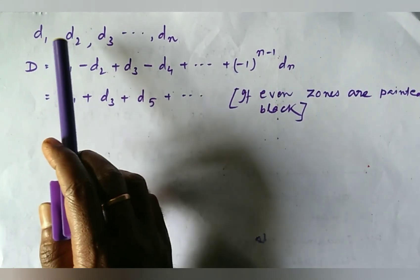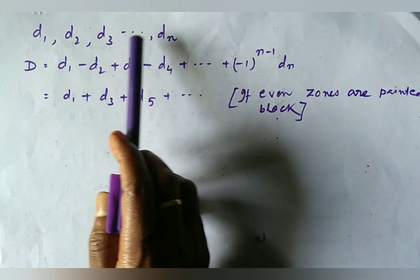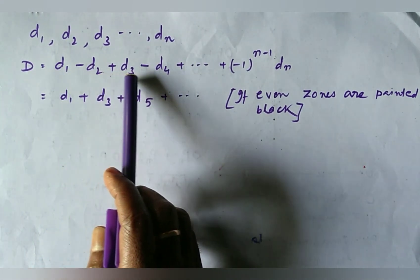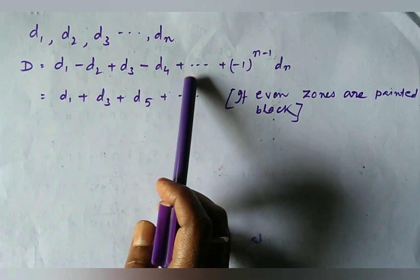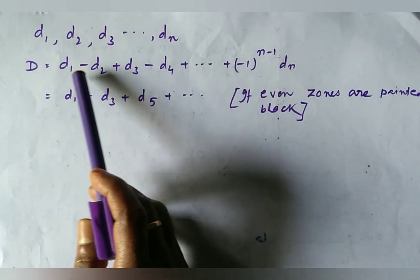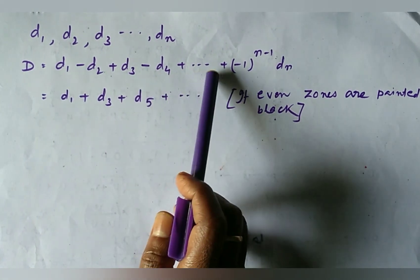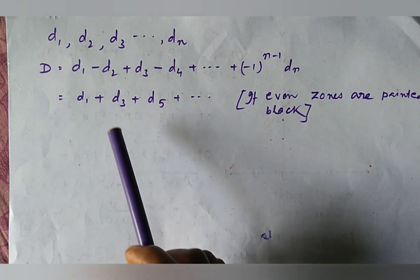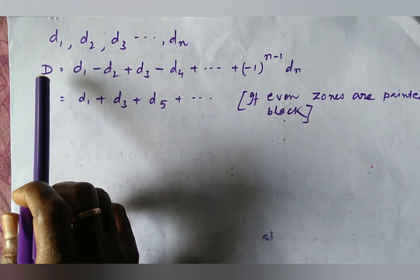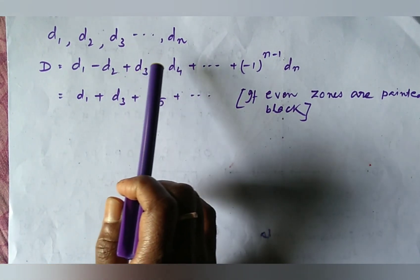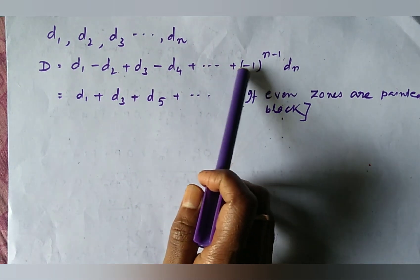If D1, D2, D3, Dn be the amplitudes at I due to the different zones then we may get the resultant amplitude at I is of the form D equal to D1 minus D2 plus D3 minus D4 plus dot dot dot minus 1 to the power n minus 1 Dn.